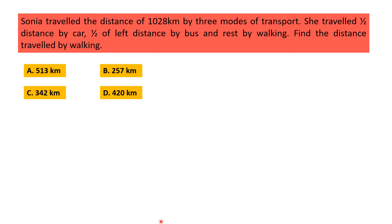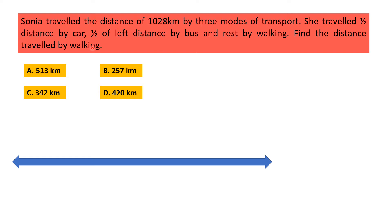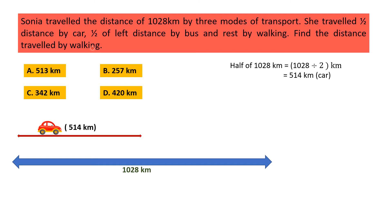Sonia traveled a distance of 1028 kilometers, and she traveled half the distance by car. Distance traveled by car is equal to half of 1028 kilometers, that means 1028 divided by 2, which is 514 kilometers traveled by car.